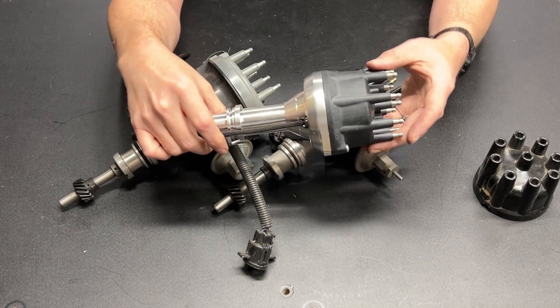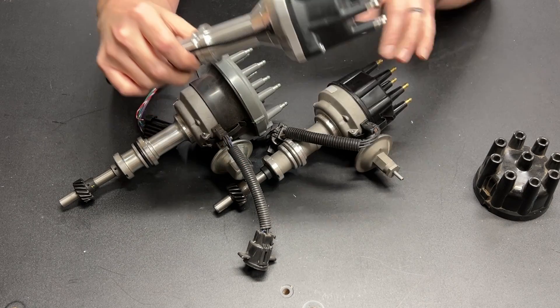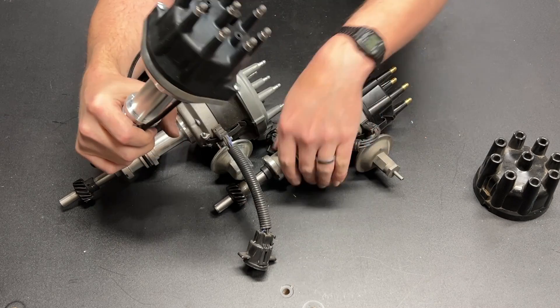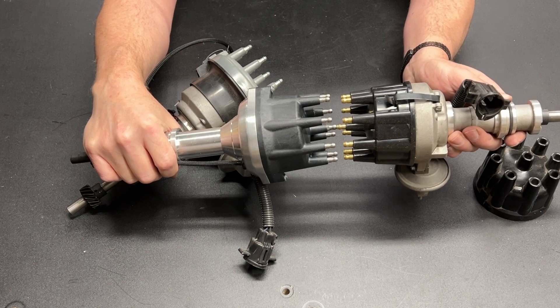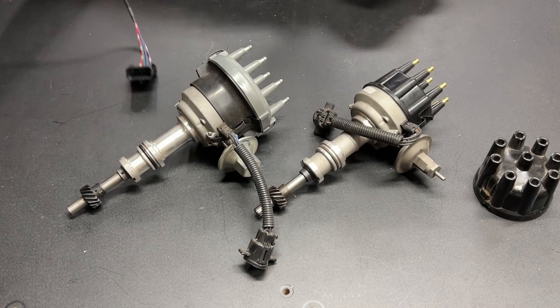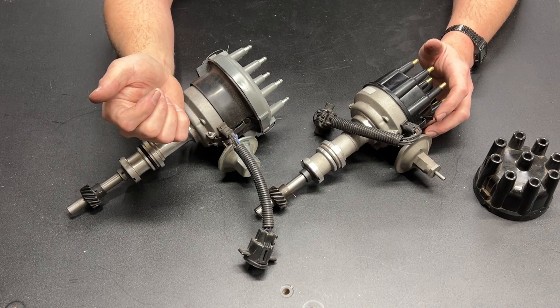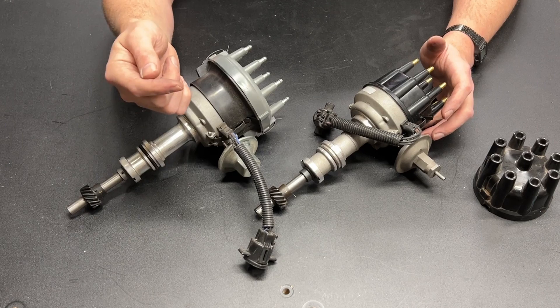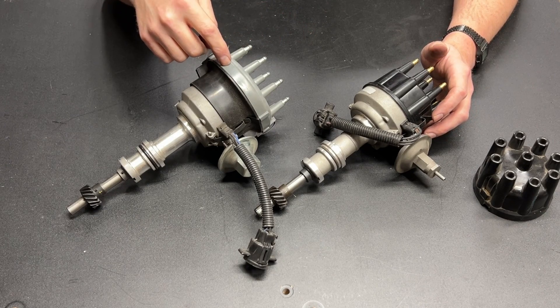This is an MSD type distributor and it runs a way hotter spark than the DuraSpark. And look how small that distributor cap is. It is basically the exact same size as this cap right here. So if MSD can get away with the smaller cap and other manufacturers besides Ford can get away with the smaller cap, why in the world did Ford do this?